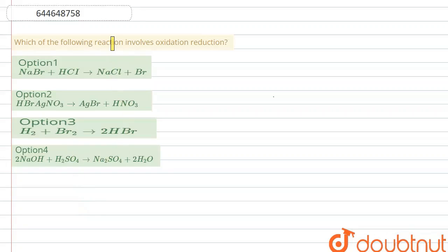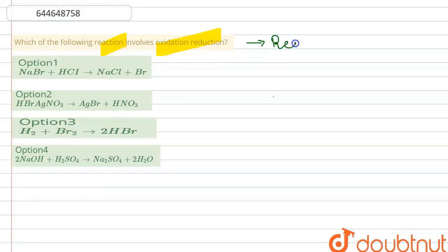Hello everyone. Let's start the given question. The question says: which of the following reactions involves oxidation and reduction? We have been given four options. The reaction in which oxidation and reduction take place simultaneously is known as a redox reaction.